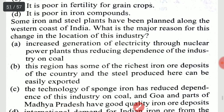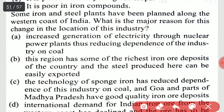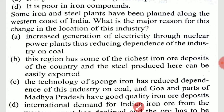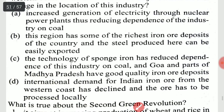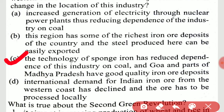Some iron and steel plants have been planned along the western coast of India. What is the major reason for this change in location? It is option C: the technology of sponge iron has reduced the industry's dependence on coal, and Goa and parts of Karnataka have good quality iron ore deposits.